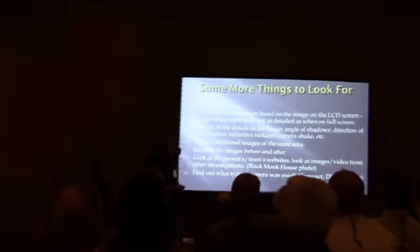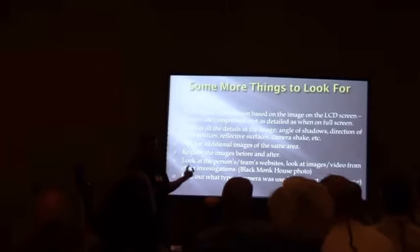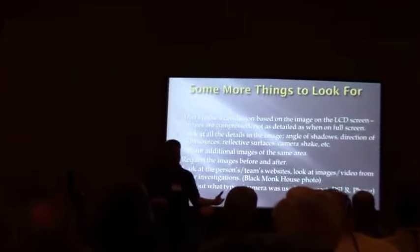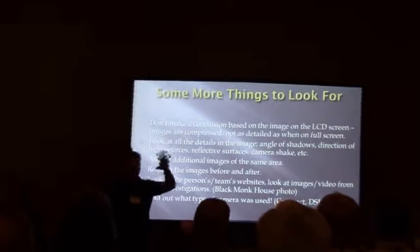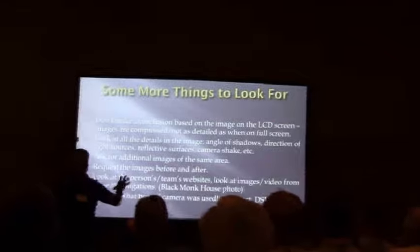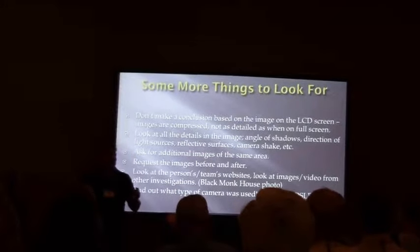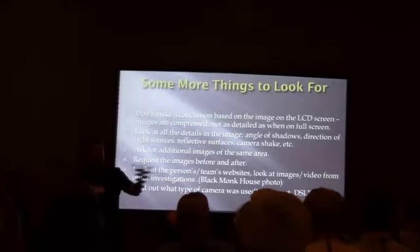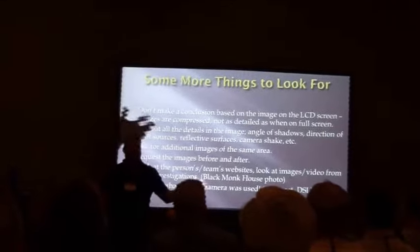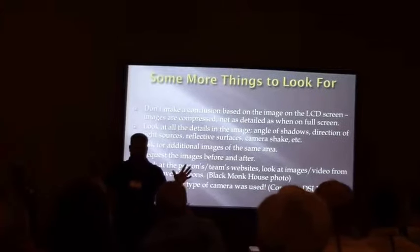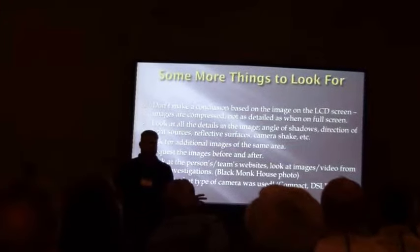Look at the shadows, directional light surfaces, reflective surfaces, camera shake — which is when you get that fuzziness all over the image. That's camera shake. Look for motion blur — that's when something is moving and you get that blurring effect. Everything else is sharp, but that one thing appears to be moving.